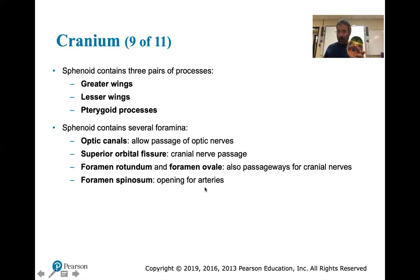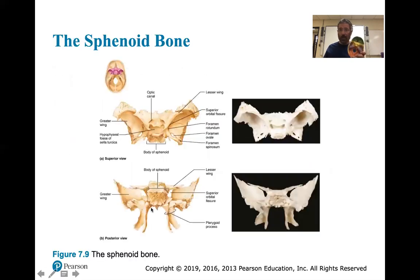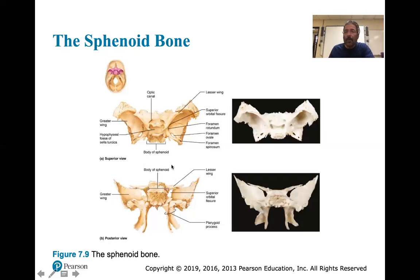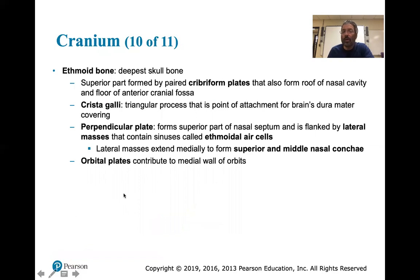The foramen spinosum is an opening for arteries. The ethmoid bone: the superior part is formed by a pair of cribriform plates, which also form the roof of the nasal cavity and the floor of the anterior cranial fossa. The crista galli is a triangular process that is the point of attachment for the dura mater covering. The dura mater is attached to keep the brain from shifting within the cerebrospinal fluid.